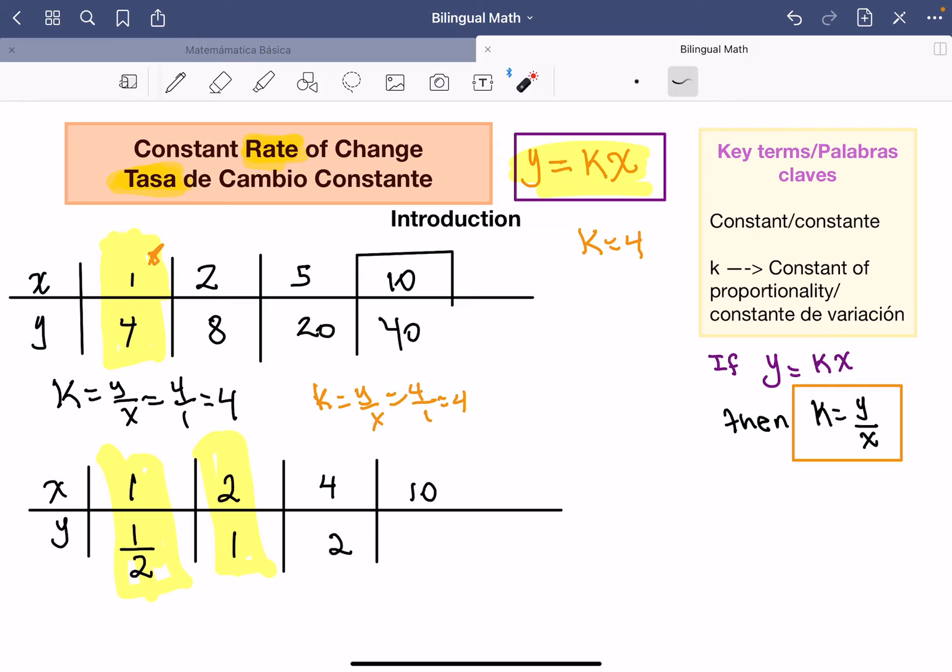Entonces estoy tratando de encontrar este valor que no tenía, estaba en blanco. ¿Cómo obtengo ese valor? Es haciendo lo mismo. Ya conozco el valor de y. Si y, y es igual, dice que y es igual a kx. Y es igual a 40. Es lo que nos dice aquí. Y es igual a 40. La k es igual a 4. Entonces 4 por x. ¿Qué valor? 4 por qué número?